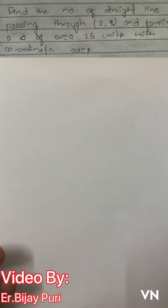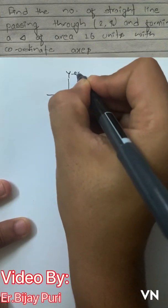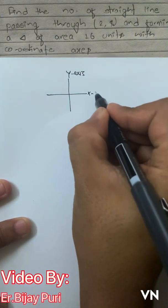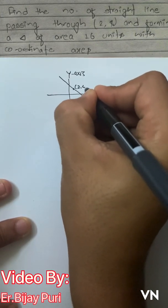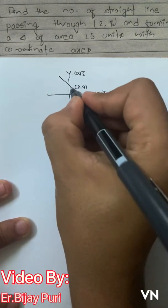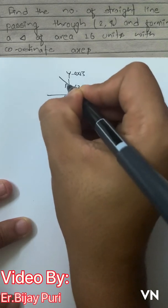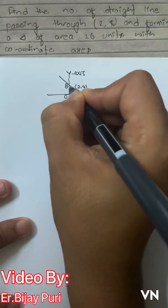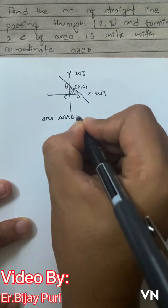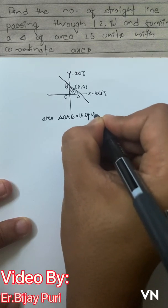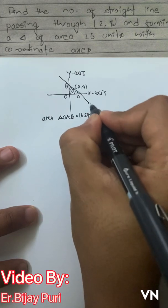Now let's get started with the next problem. This is a coordinate axis — this is the y-axis and this is the x-axis. Let's say this is a line which passes through the point (2, 4) and it makes a triangle OAB with the coordinate axes whose area is 16 square units as given.